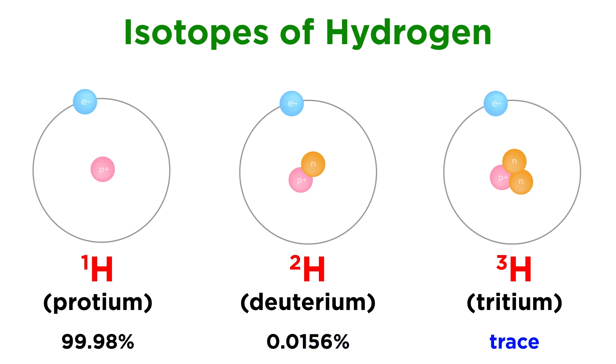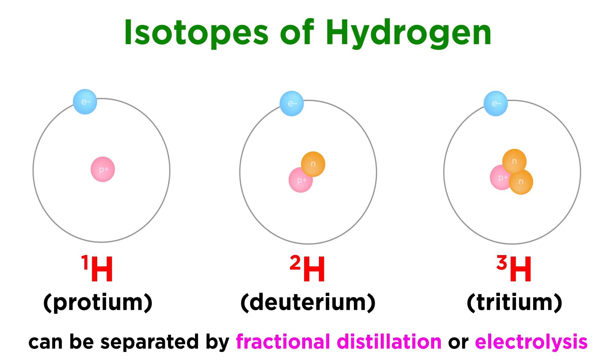Finally, we have only trace amounts of tritium, which is radioactive, decaying via beta emission with a half-life of 12.4 years. It is formed in the upper atmosphere due to collisions between atmospheric particles and cosmic rays. These isotopes can be separated by fractional distillation or electrolysis.